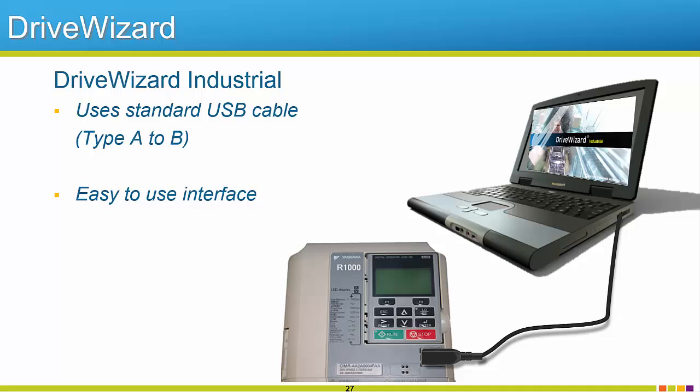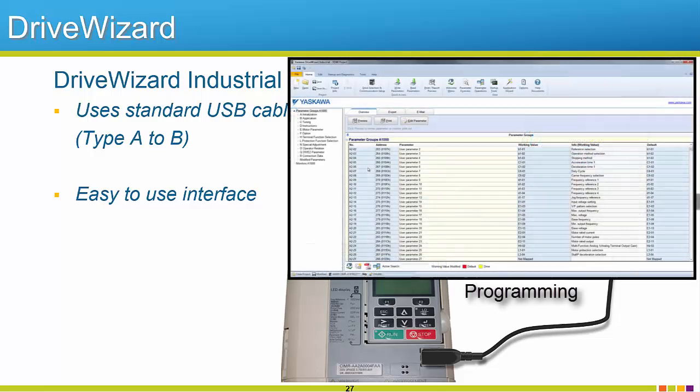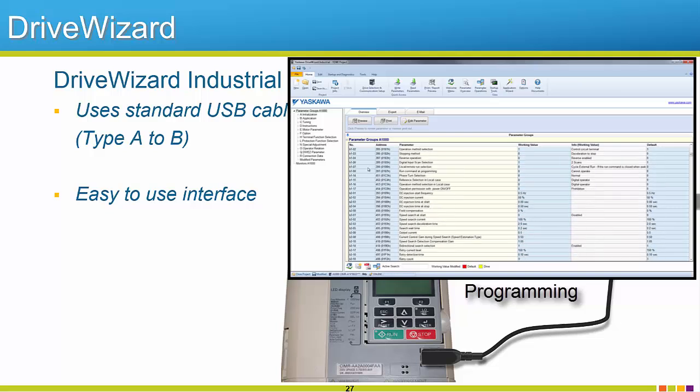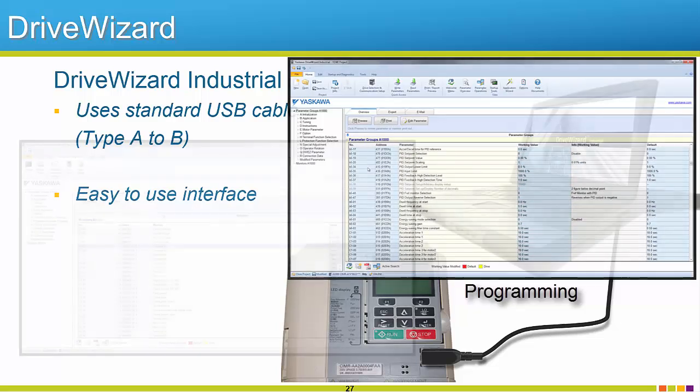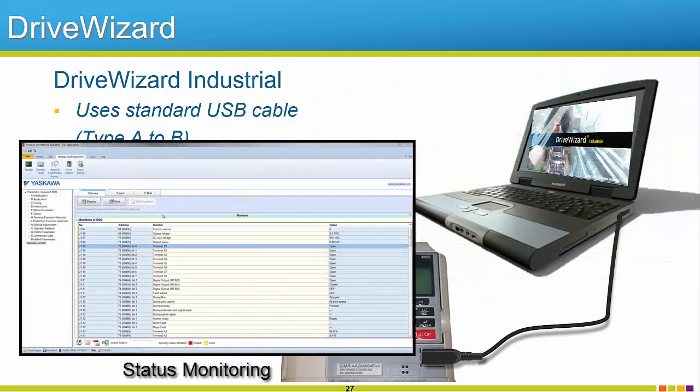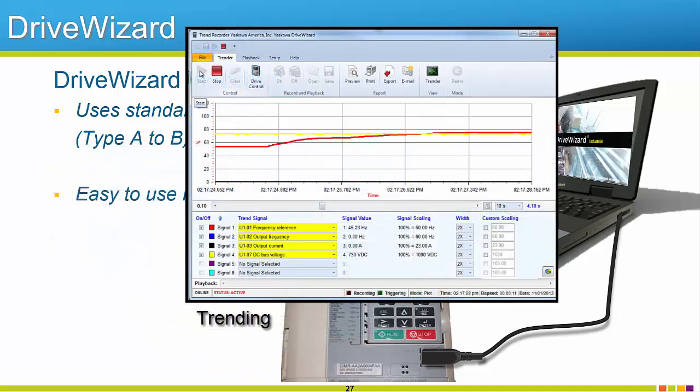To accelerate setup and programming further, Yaskawa's PC tool, DriveWizard Industrial, can connect to the R1000 with a standard type A to B USB cable. This software is free. The software features the ability to create and save parameter files without the need of being physically connected to the unit itself. Programming from the R1000 can be backed up for storage as a number of different file types for personal reference or for sharing and sending to others. Live parameter editing can be performed as well as graphic trending for up to six monitors at a time.